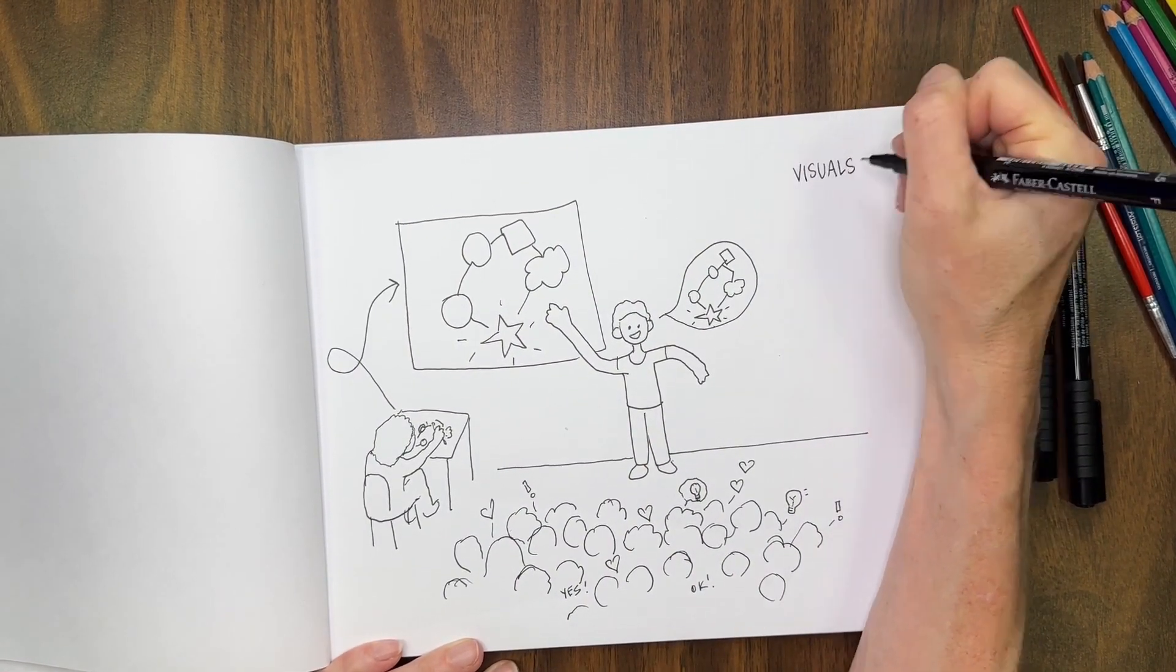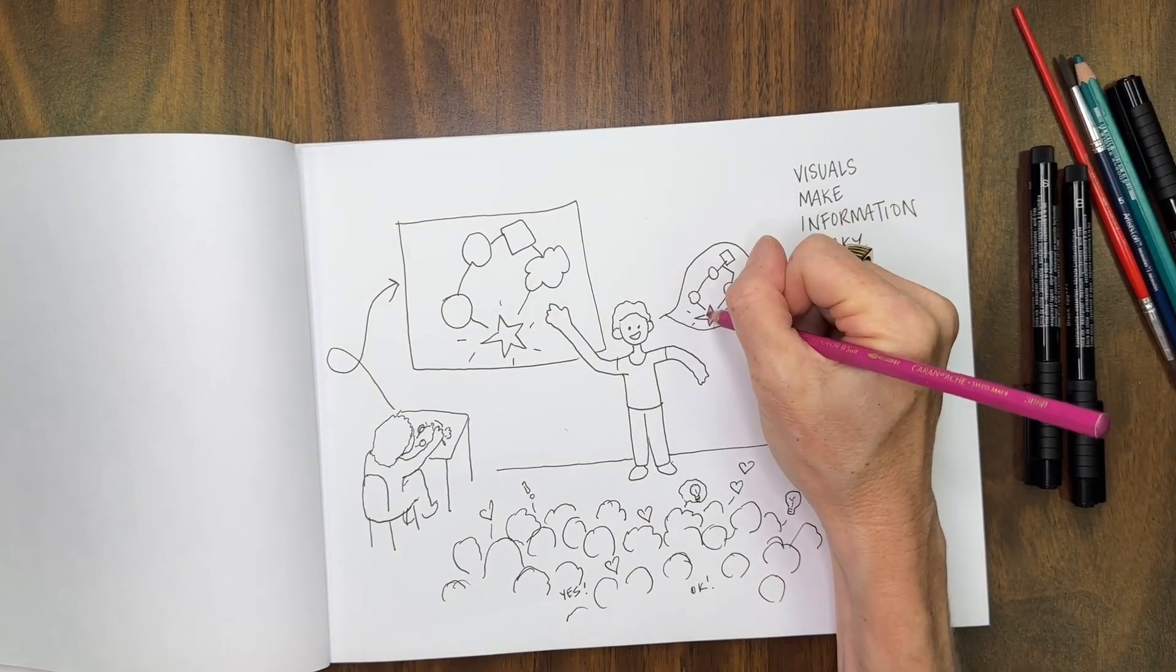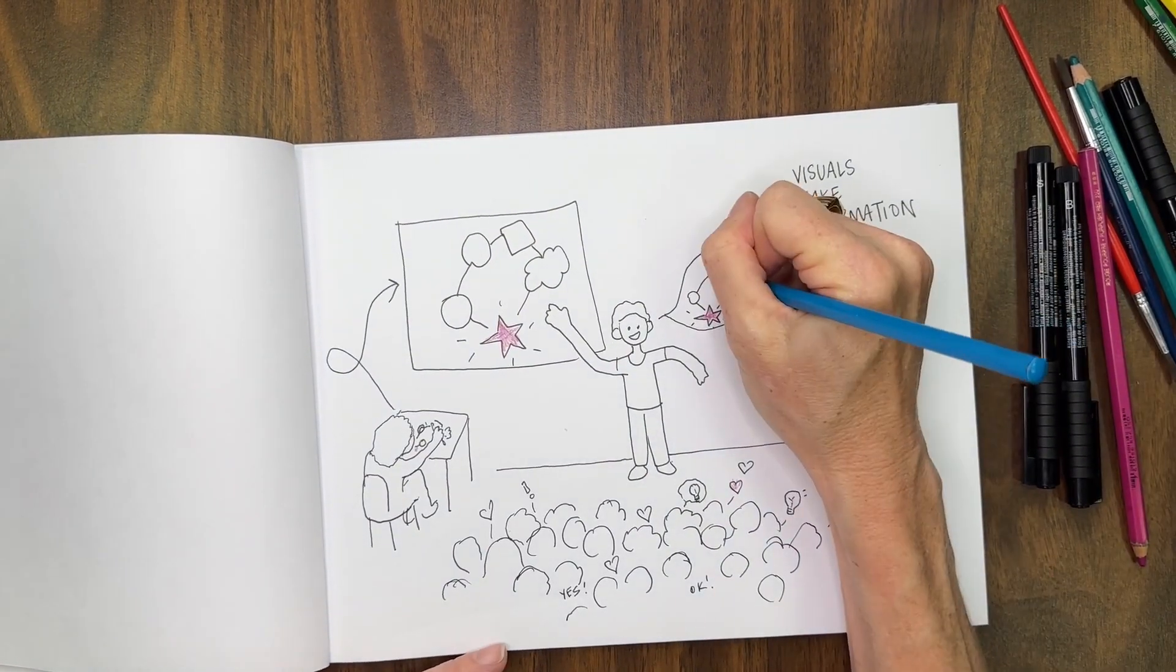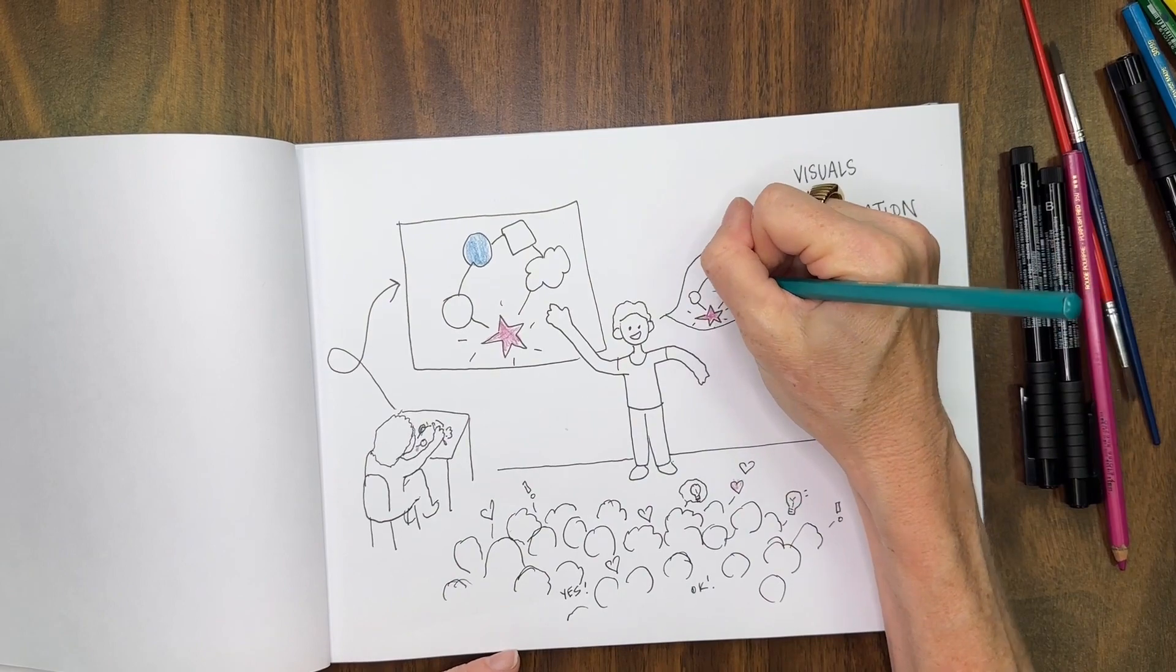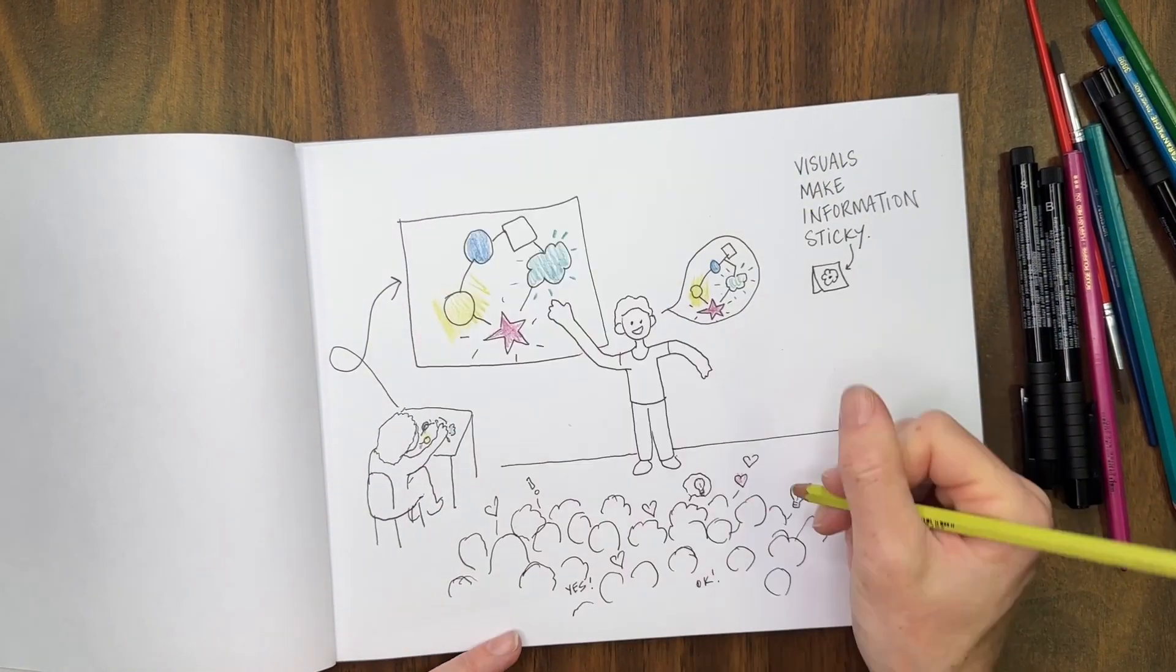And that's because visuals make information sticky. Most of us are visual learners, actually about 60% of the population, which is quite a lot. When we see things, it helps us remember it. It helps drive those points home and stay in our minds.